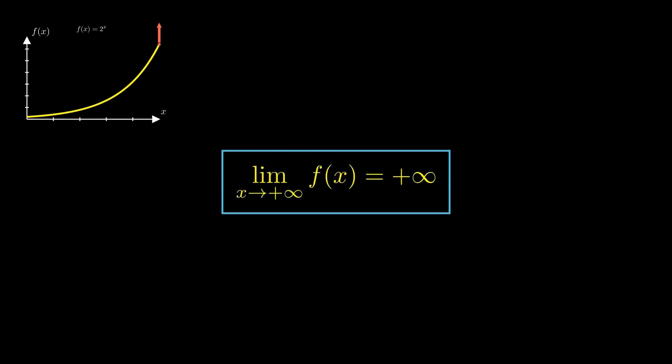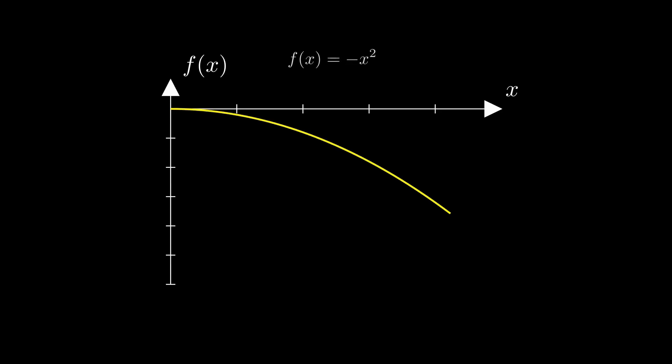A few things can happen. The function can grow without bound. It goes to infinity. It might decrease without bound. It goes to minus infinity.